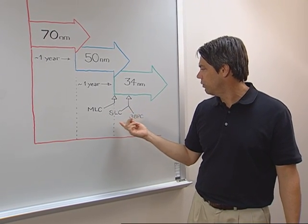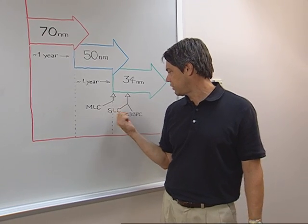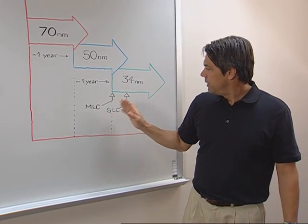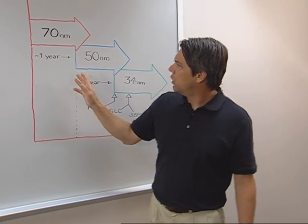Then later in the process node, we will introduce what we call our derivative products, which are SLC and 3-bit per cell. And we need some level of process maturity to be able to do that. That's why we wait.